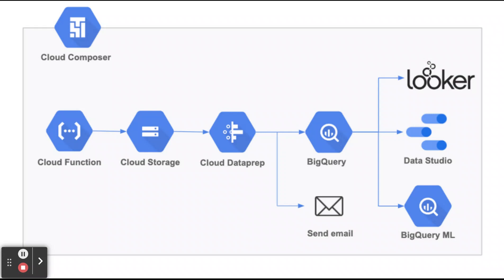In terms of use cases, Cloud Composer is used to programmatically schedule and monitor workflows, while Dataflow is used to process large amounts of data in a reliable and scalable way. Cloud Composer is easy to use, flexible, and cost-effective, whereas Dataflow is scalable, fault-tolerant, and suited for batch and streaming processing. A disadvantage of Cloud Composer is that it is not as powerful as Dataflow for data processing and scaling. A disadvantage of Dataflow is that it cannot be used as easily as Cloud Composer for workflow orchestration.